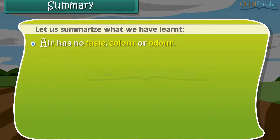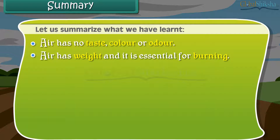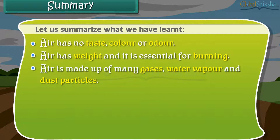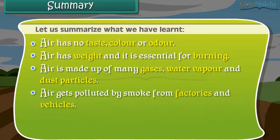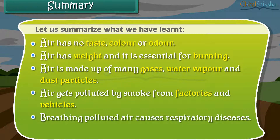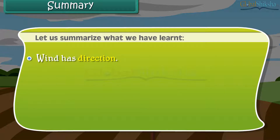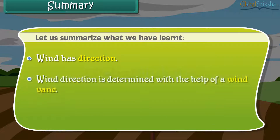Summary: Air has no taste, colour, or odour. Air has weight and it is essential for burning. Air is made up of many gases, water vapour, and dust particles. Air gets polluted by smoke from factories and vehicles, and breathing polluted air causes respiratory diseases. Moving air is known as wind, and wind direction is determined with the help of a wind vane.